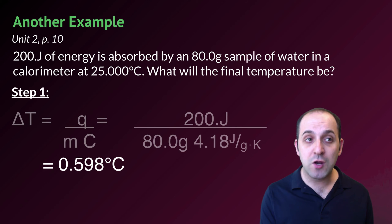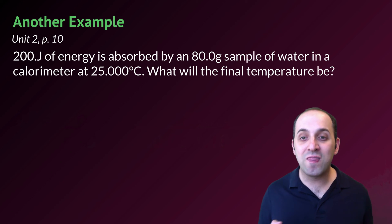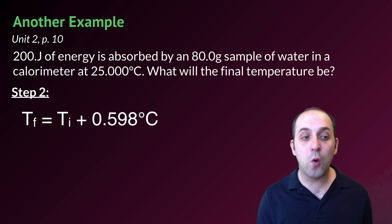But we're not done, because the question is asking us what the final temperature of the water will be. All we know right now is the change in temperature. In order to figure out the final temperature, we're going to need to take our initial temperature of 25.000 degrees Celsius and add our change in temperature to it.